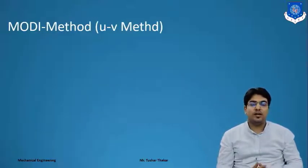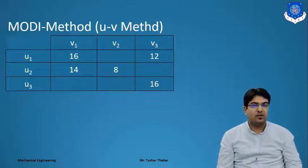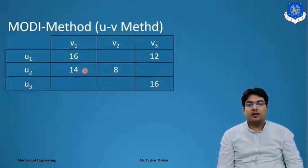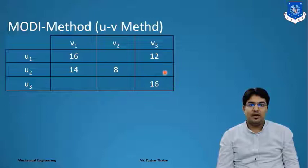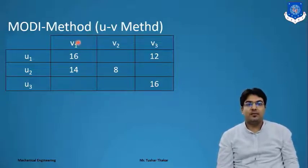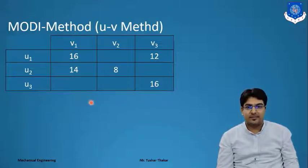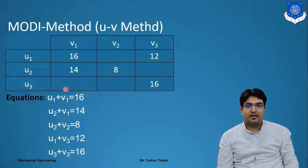For the Modi method, we take the allocated cells for the first iteration. We make a table in the form of U and V components: V1, V2, V3, U1, U2, and U3. The allocated cell values are 0.8, 0.12, 60, 40, and 60. Using these allocated cells we form equations in U and V: U1 plus V1 equals 60, U2 plus V1 equals 40, U2 plus V2 equals 8, and U3 plus V3 equals 60. There are 5 equations in total.